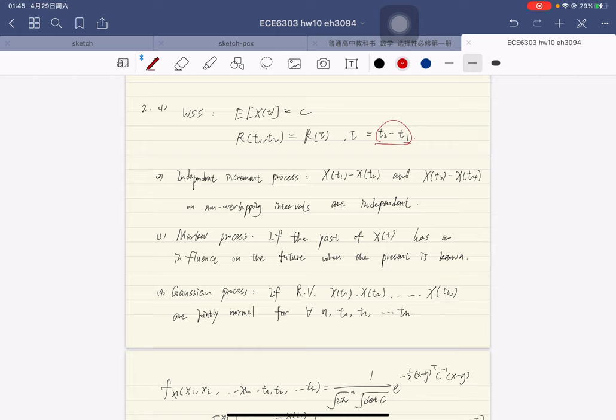If we let T1 equals to T2, which means R(T1, T1), we see that when the input is WSS process, the output of a stable linear transform system is also WSS.